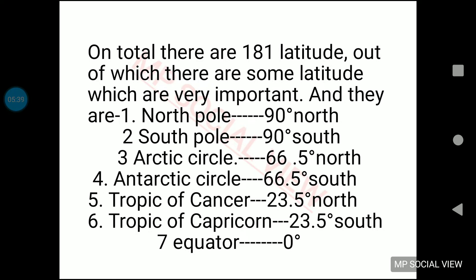The north pole and south pole are important because they are the two fixed points on the earth which never change their position. When you see a globe, the ball of the globe is held from two fixed points — those are the north pole and south pole. The entire globe rotates, but those two points from which it is attached remain fixed. Those two fixed points of earth are the north pole and south pole, and that is why they are given importance.